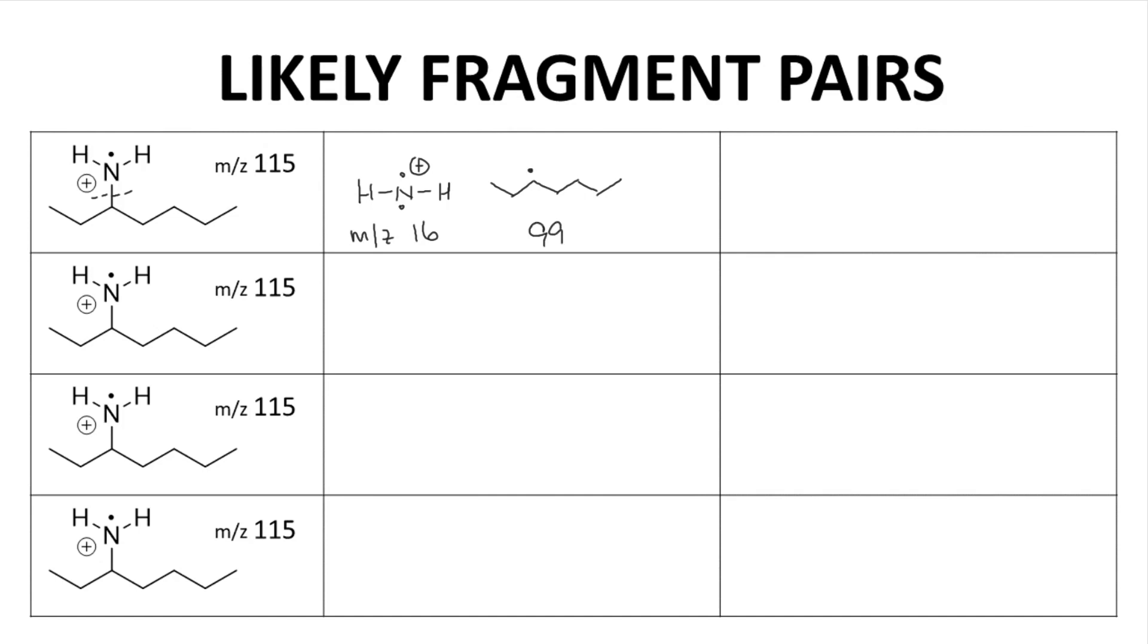The other way of breaking bond A would give this neutral fragment with a mass of 99, that's neutral and unobserved, and this cation which has an Mz of 99.